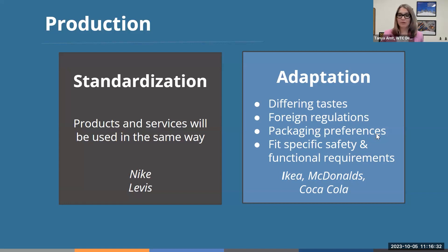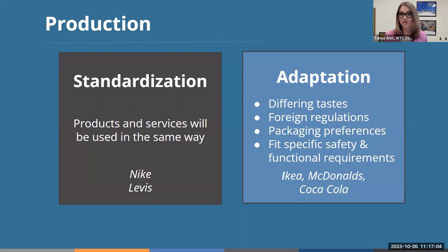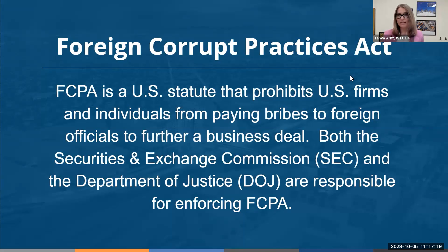For example, McDonald's in China might have some items exactly the same as in the United States, and some adjusted to specific tastes. Another example of packaging preferences: an ice cream manufacturer here in Colorado decided to enter the Japanese market. They sent samples in gallons as they sell here, but after talking to customers there, they realized the size was very important. They had to adapt and change the packaging to much smaller quantities, and that worked much better for that specific market.